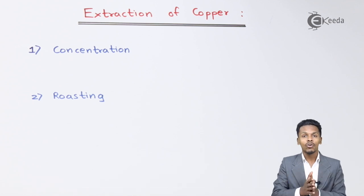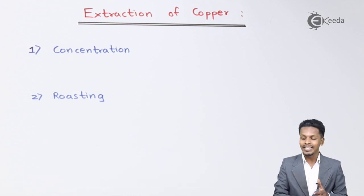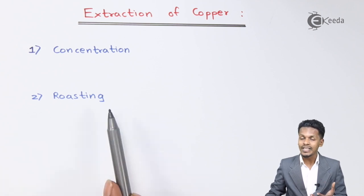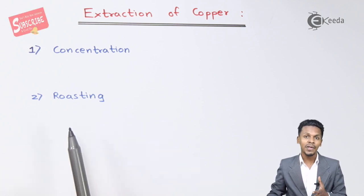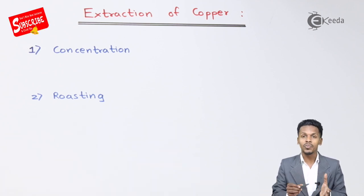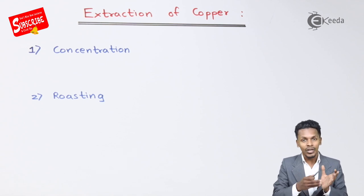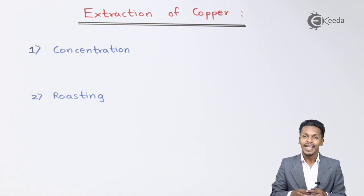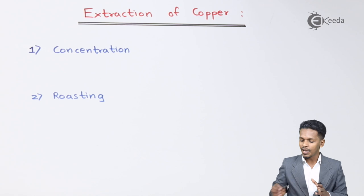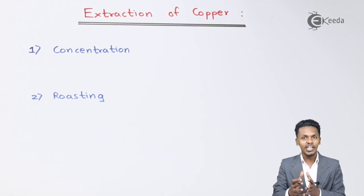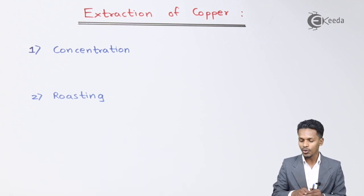The copper pyrites obtained after concentration then undergo a roasting process. The reactions that take place in roasting allow us to convert the copper pyrites into copper oxide. I am going to talk about roasting and the reaction that takes place in it.